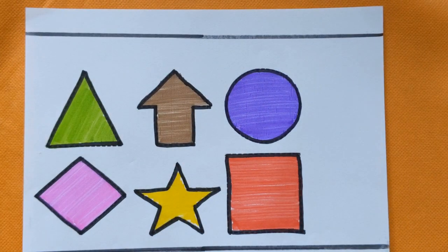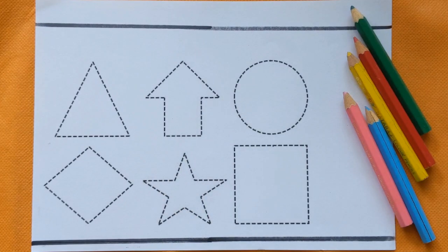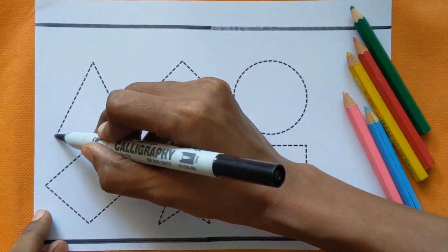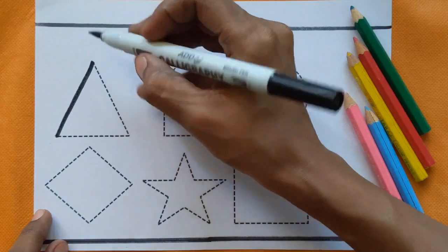Let's get started. Black color, at first let's trace the shapes just by following the dots.